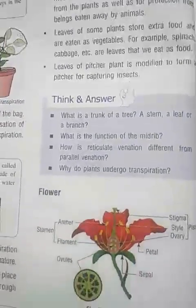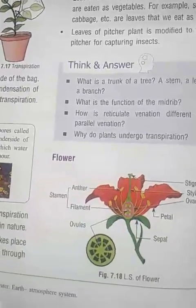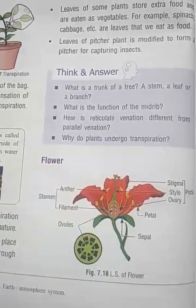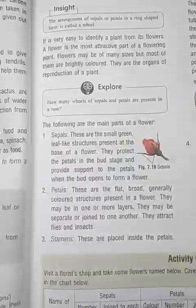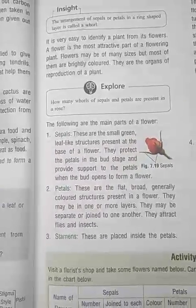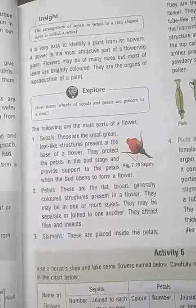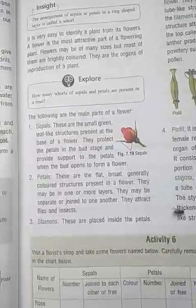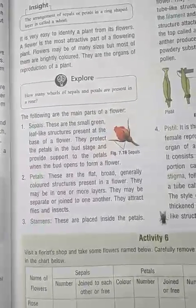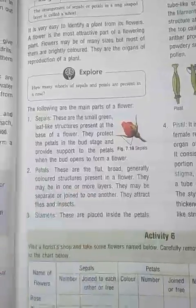Flowers have the following parts: sepals, petals, pistil, and stamens. It is very easy to identify plants from their flowers. Flowers are the most attractive part of flowering plants, attracting other organisms. They may have many sides but most are brightly colored. They are the reproductive organs of the plant.